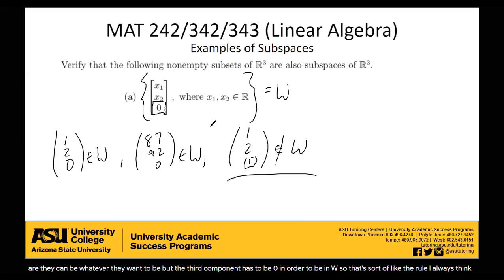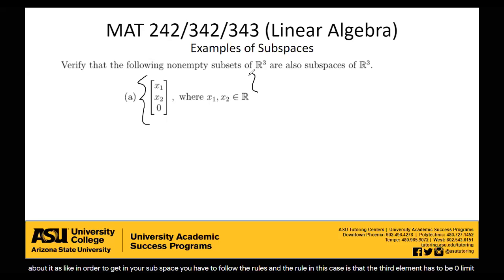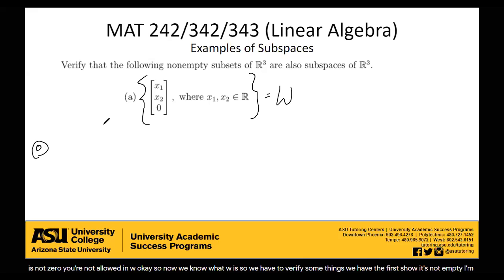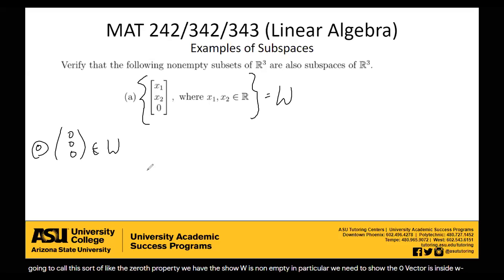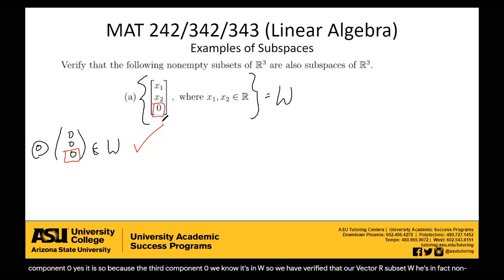Now we know what W is. We have to verify some things. First, we have to show W is not empty. We need to show the zero vector is inside W. Is the vector 0, 0, 0 inside W? We look at the third component — is it 0? Yes, it is. So because the third component is 0, we know it's in W. We have verified that our subset W is, in fact, non-empty. Specifically, it has the zero vector.